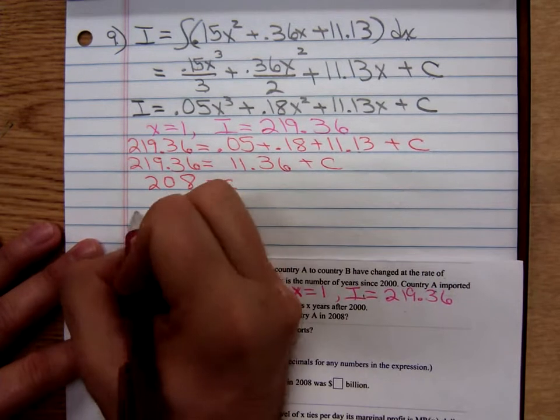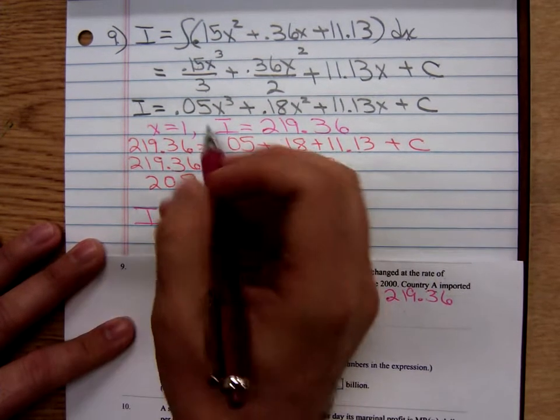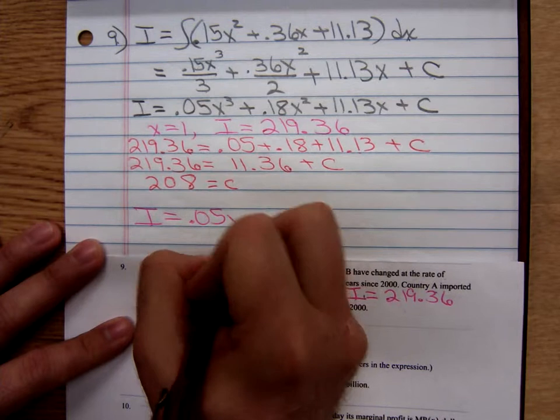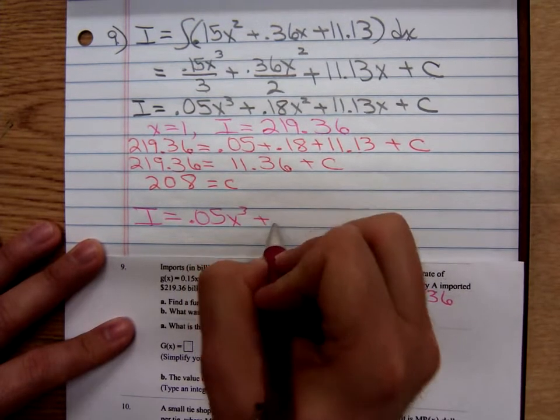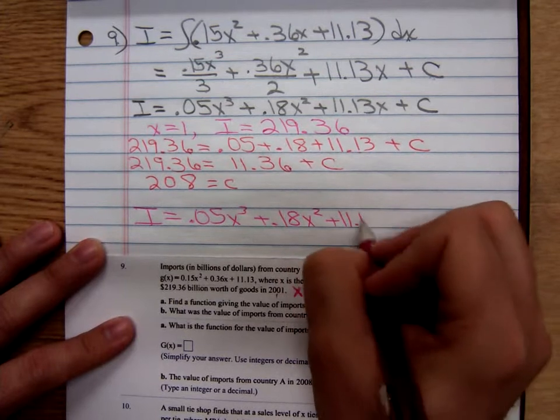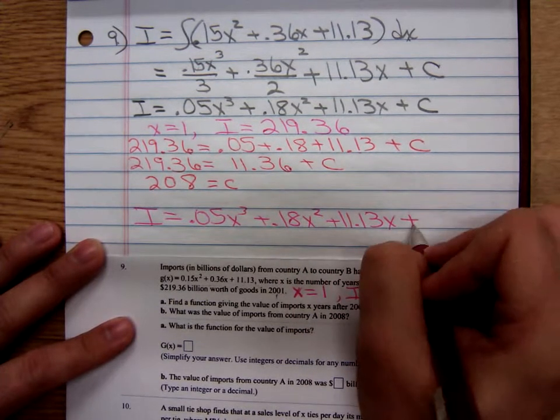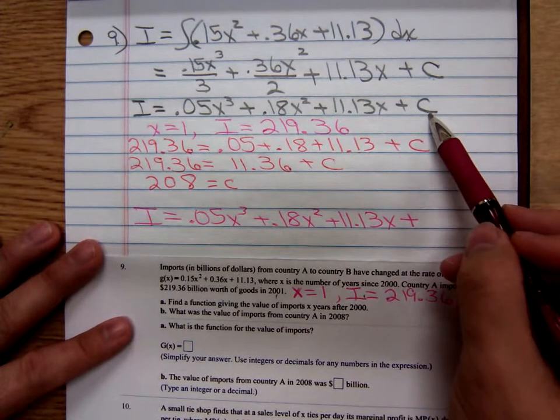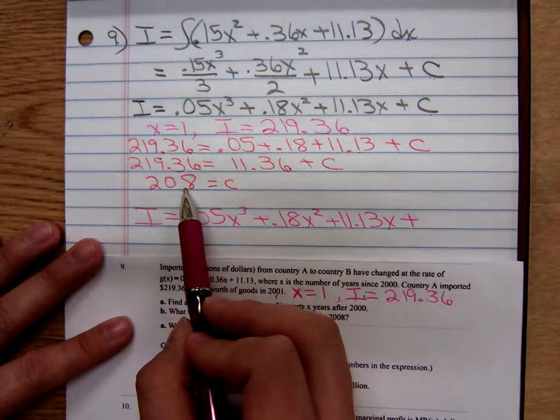Here's my import function: I equals 0.05x cubed plus 0.18x squared plus 11.13x plus my constant turned out to be 208.